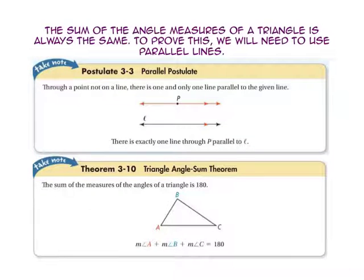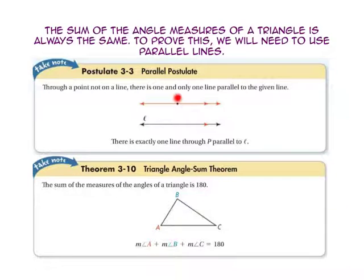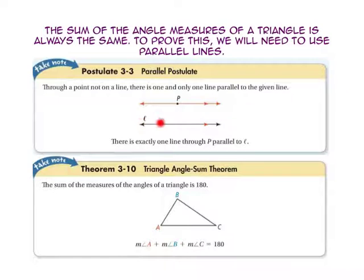The sum of the angle measures of a triangle is always the same. To prove this we will need to use parallel lines. Take a look at the parallel postulate: through a point not on a line, there is one and only one line parallel to a given line. There is exactly one line through point P that is parallel to line L.